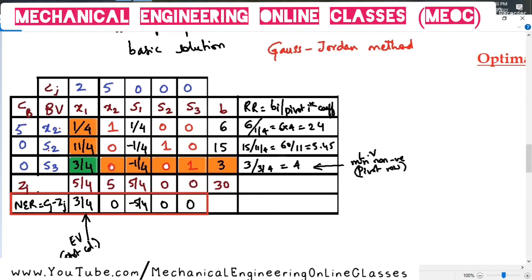So, that condition is called an optimality condition for a simplex method of max type. Or if the net evaluation row has all zeros or positives, then the optimality is attained for a min type of problem. So, that is what is called an optimality condition for simplex method.